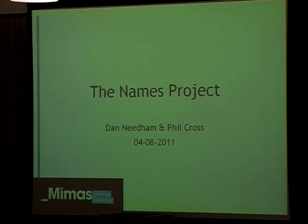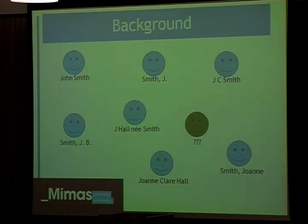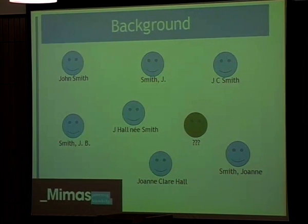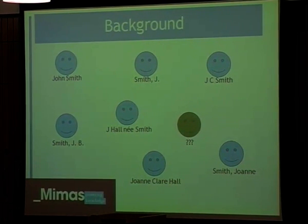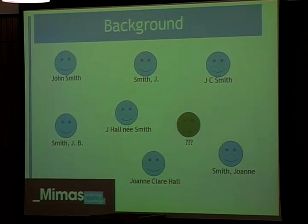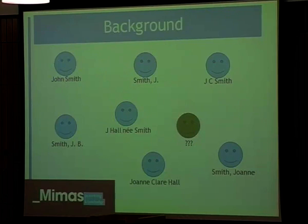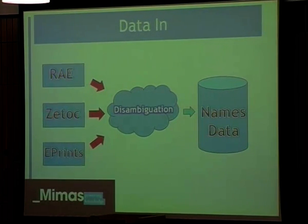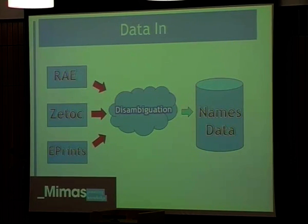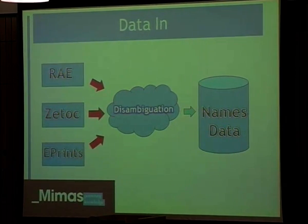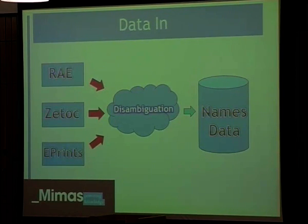The NAMES project is a JISC-funded project and we're working with the British Library, aiming to identify individuals and institutions within UK academia and also look at the feasibility of a NAMES authority service. As part of that we've been working on a software prototype. We wanted to initially build a central record store, so we took a number of external data sources like RAE, Merit Data, ZETOC Data and others and tried to disambiguate the unique individuals and institutions from within those data sources to build our own records that we could assign unique identifiers.